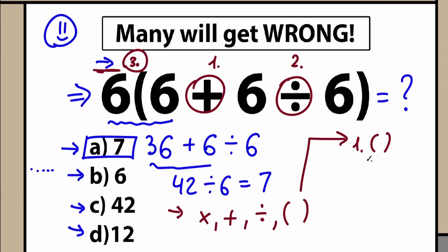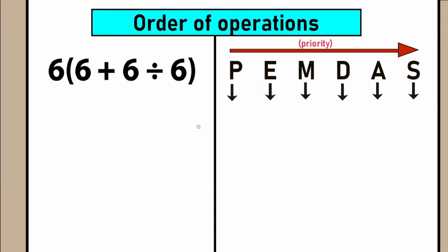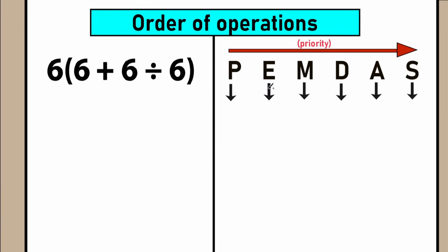For example, first place is parentheses, second place is multiplication and division, and so on. We have an algorithm and basic principles. So right now let's learn about order of operations — and after analyzing this, we can easily find the correct answer. A lot of students say option A is correct, but let's look closely at what I'm going to explain.